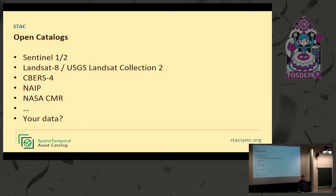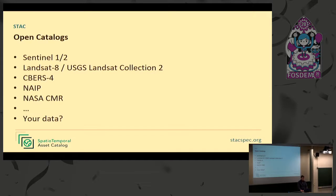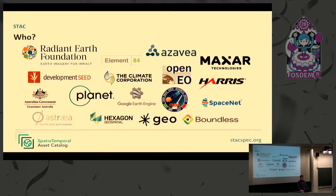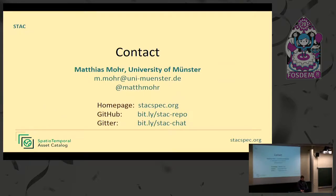We're working on making several catalogs openly available. At the moment there are Sentinel-1 and -2, Landsat-8 and USGS Landsat Collection 2 offered directly as STAC catalogs from USGS, CBERS-4 (the China-Brazil Earth observation satellite), and NASA CMR translated into STAC, plus more coming in preparation. It's pretty simple to expose data this way, so if you have data you want to be found, it's a good idea to expose a STAC catalog.